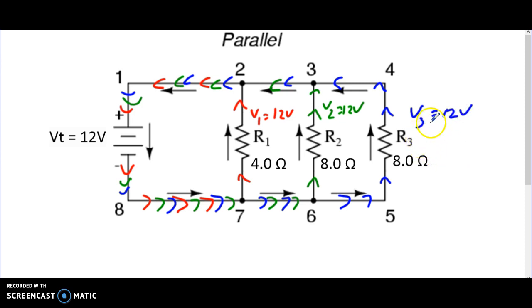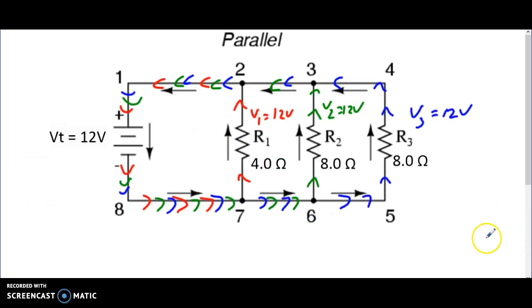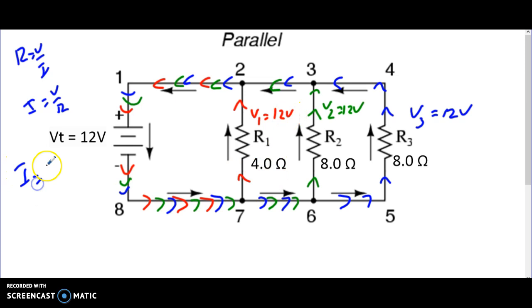So we now know the voltage at every spot — it's all the same. From our cheat sheet, the voltage total equals voltage at spot one, which equals voltage at spot two, and spot three, and so on. Because we know R = V/I, we can figure out the current at every spot. At spot one, voltage is 12 and resistance is 4, so current equals 12 divided by 4 — the red electrons have a current of 3 amps. At V2, it's 12 divided by 8, giving a current of 1.5 amps. At the third spot with blue electrons, it's also 12 divided by 8, so current is 1.5 amps.